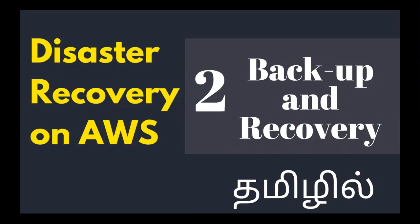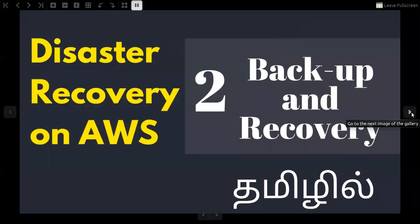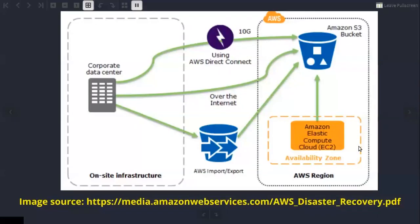We are going to look at the first deployment model of DR on AWS. The first model is Backup and Recovery. There are a lot of costs. However, if you look at the RPO, it is huge.